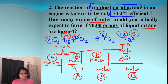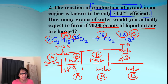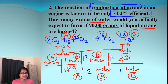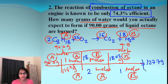For the grams-to-moles ratio: 1 mole over 114.26 (molar mass of octane). For the mole-to-mole ratio: octane has a coefficient of 2 and water has a coefficient of 18. For moles to grams of water: 1 mole over 18.02 (molar mass of water). Solving that gives a theoretical yield of 127.7 grams.